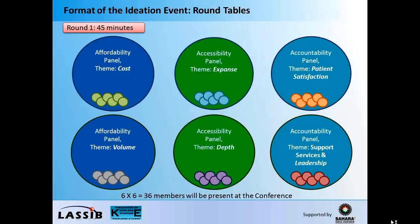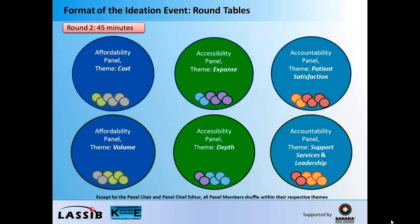Now, as the first round of these tables is over, the tables and the participants will shuffle. And therefore, the table that earlier discussed affordability as cost will now discuss affordability as volume, and the table that discussed volume will discuss the other perspective as cost. Similarly, expanse will discuss depth, and depth will discuss expanse. Patient satisfaction will discuss support services and leadership, and vice versa. The reason why we are doing this is because we will have a rich merger of multiple perspectives from each of the tables, and at the same time, we also converge to looking at, on one theme area, the key, most important perspectives that emerge at the end of the ideation event.